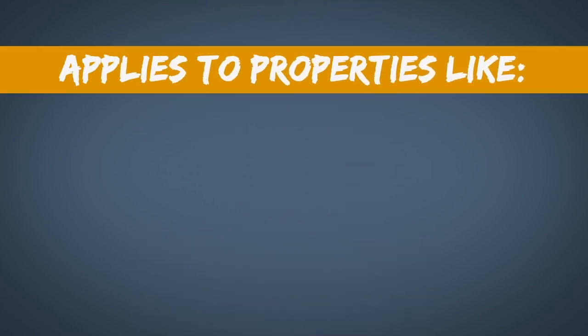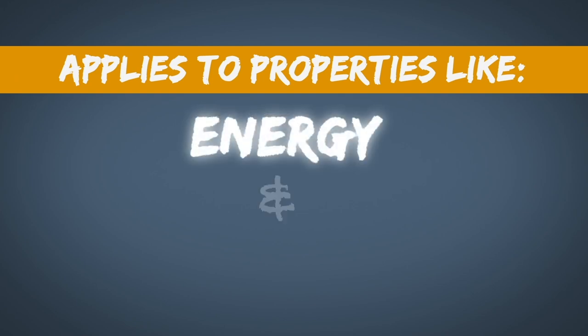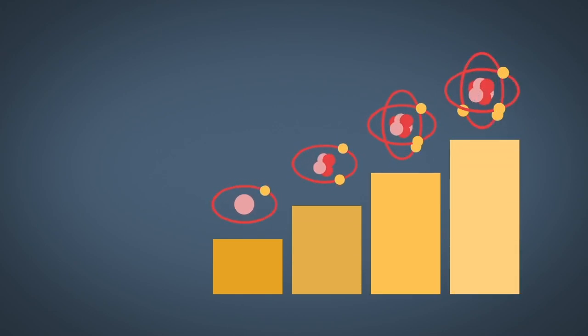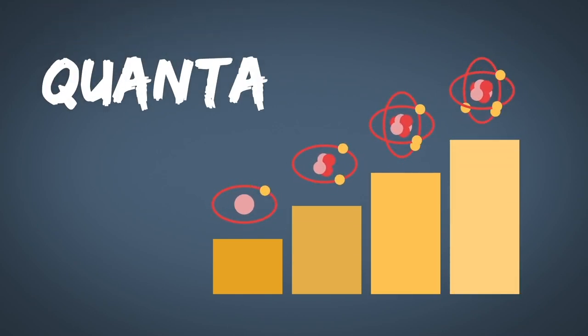Certain properties of subatomic systems like energy or angular momentum come in discrete levels or packets or what we call quanta, hence the name quantization.